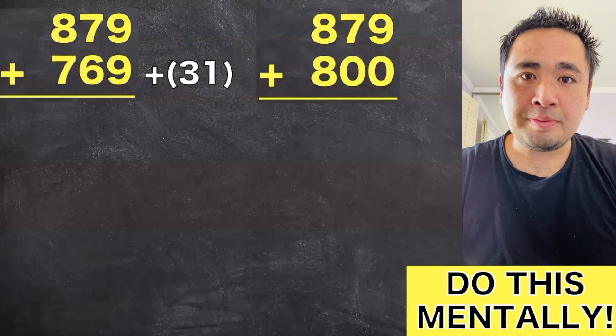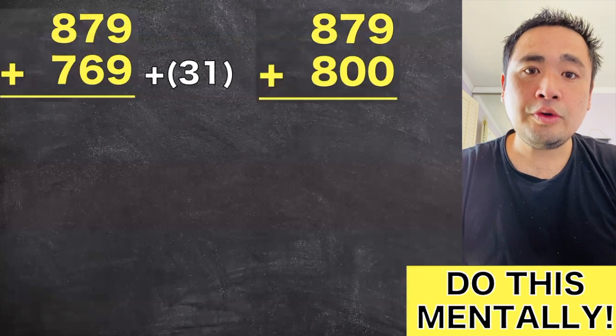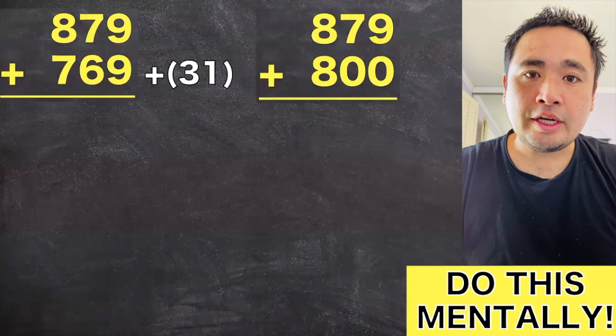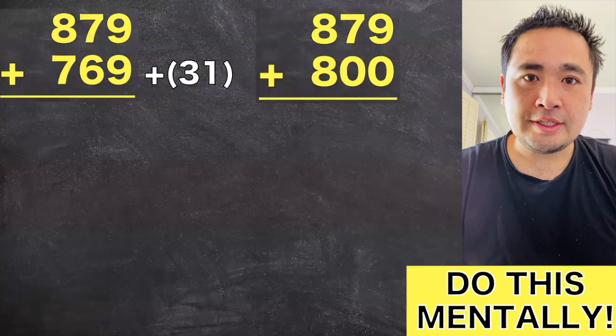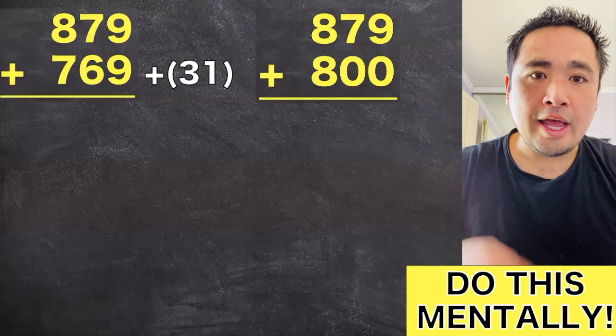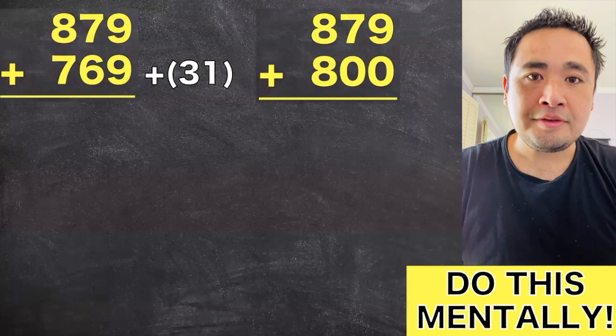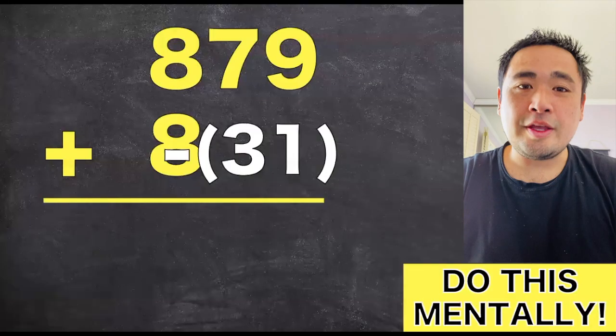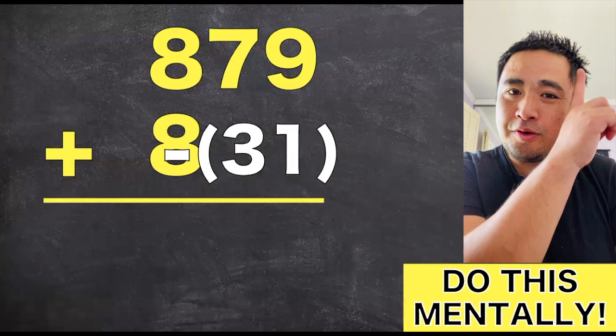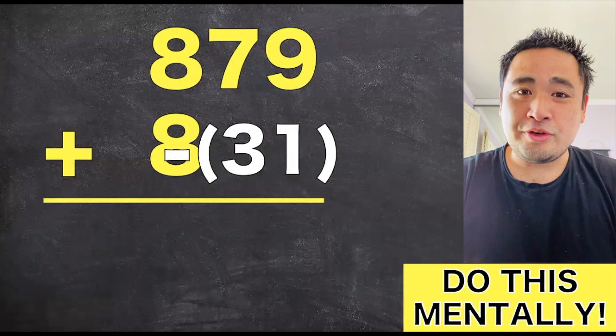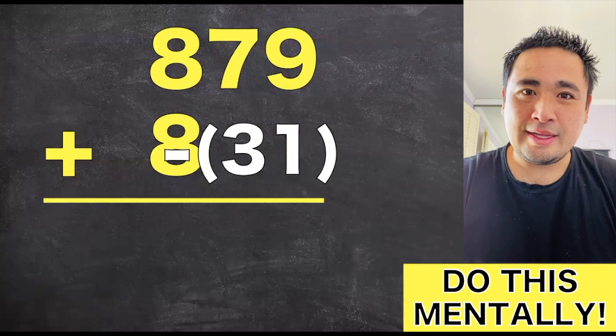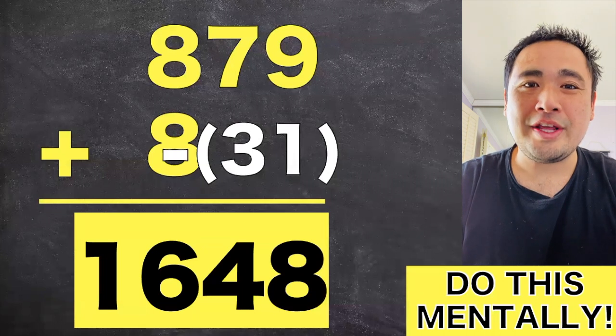Now the rest of the steps are pretty much identical to the two-digit strategy. Using the complement, we're going to round the 769 to 800. And in our mind, we're already going to add the 8 and the 8, and lead off saying 16. And then we can tuck the 16 into the corner of our brain and subtract the complement back. So our final answer is 1648.